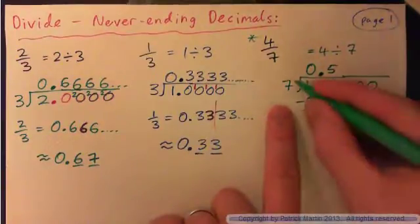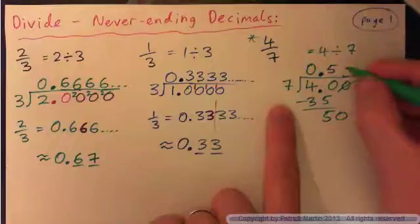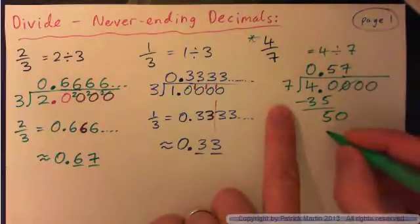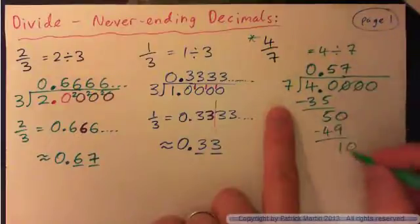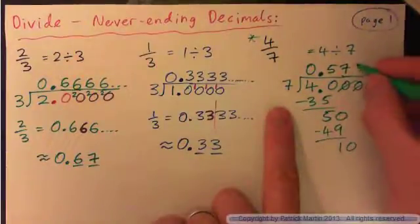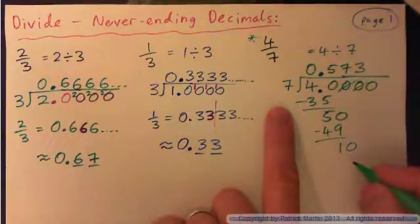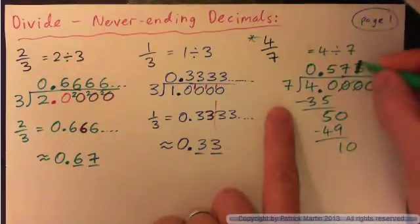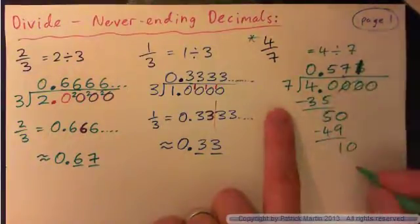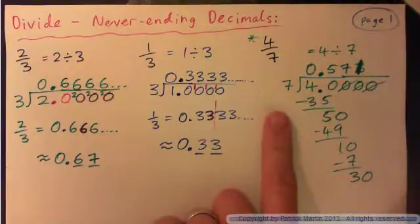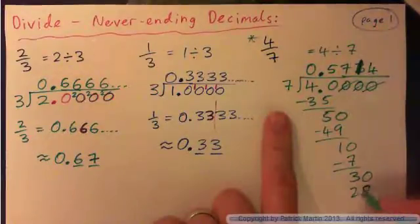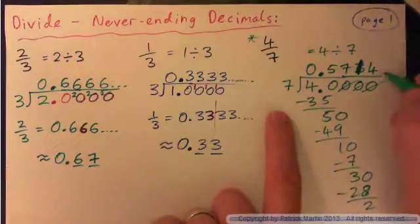Bring a 0 down. 7 into 50 goes 7 times. 7 sevens is 49. Subtract, we get 1. Bring down: 10. 7 into 10 goes 1 time. 1 seven is 7. Subtract and we get 3. Bring a 0 down. 7 into 30 goes 4 times. 4 sevens is 28. Subtract and you get 2. This is going to go on forever.